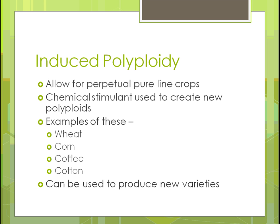Induced polyploidy allows for the perpetual use of pure line crops, which are created through many generations of keeping only the best plants. A chemical stimulant is used to create new polyploids — the genes within the organism. This is used with wheat, corn, coffee, and cotton, and it gets down to the gene level. This is a controversial area because genes are being taken from one organism and put into another.